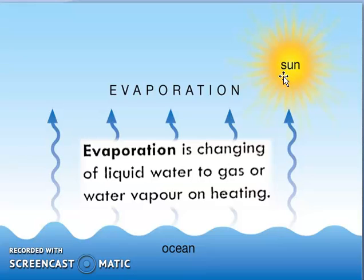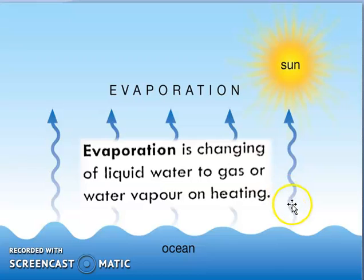This can also be observed at home when water gets heated. Evaporation happens — gas is produced. In Hindi you call it 'bhaap.' Water is converted into gas that rises up because gas is light-weighted. It rises up into the atmosphere, and when it reaches a height, condensation happens.